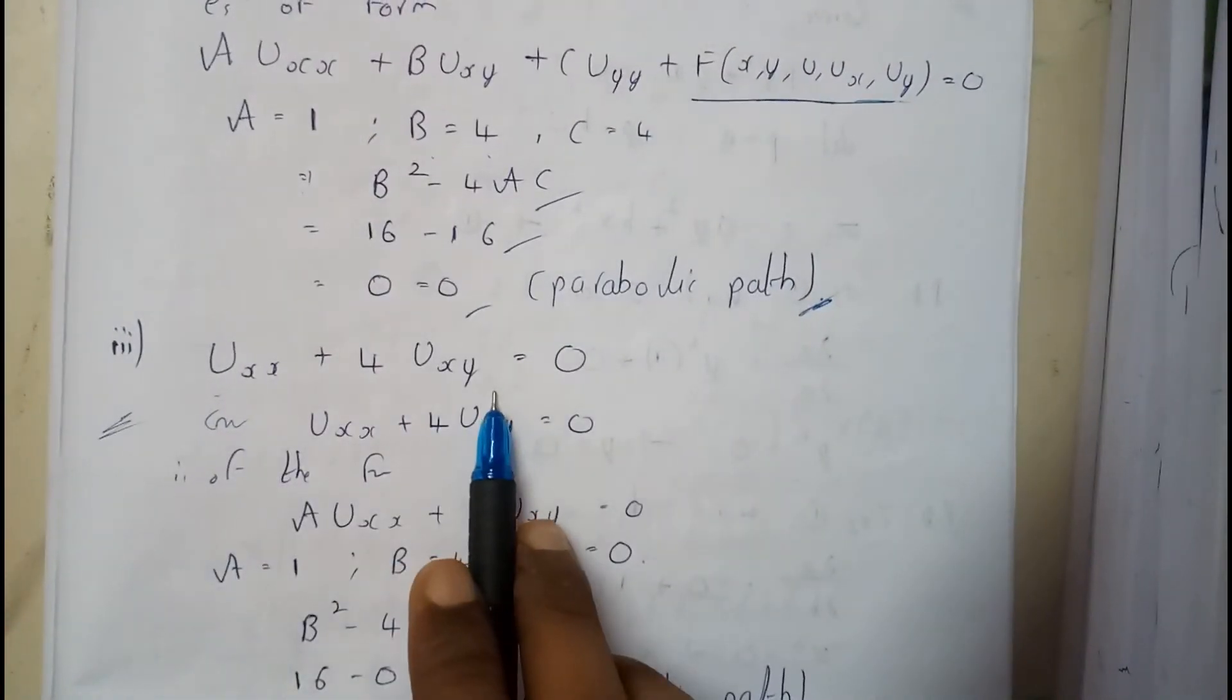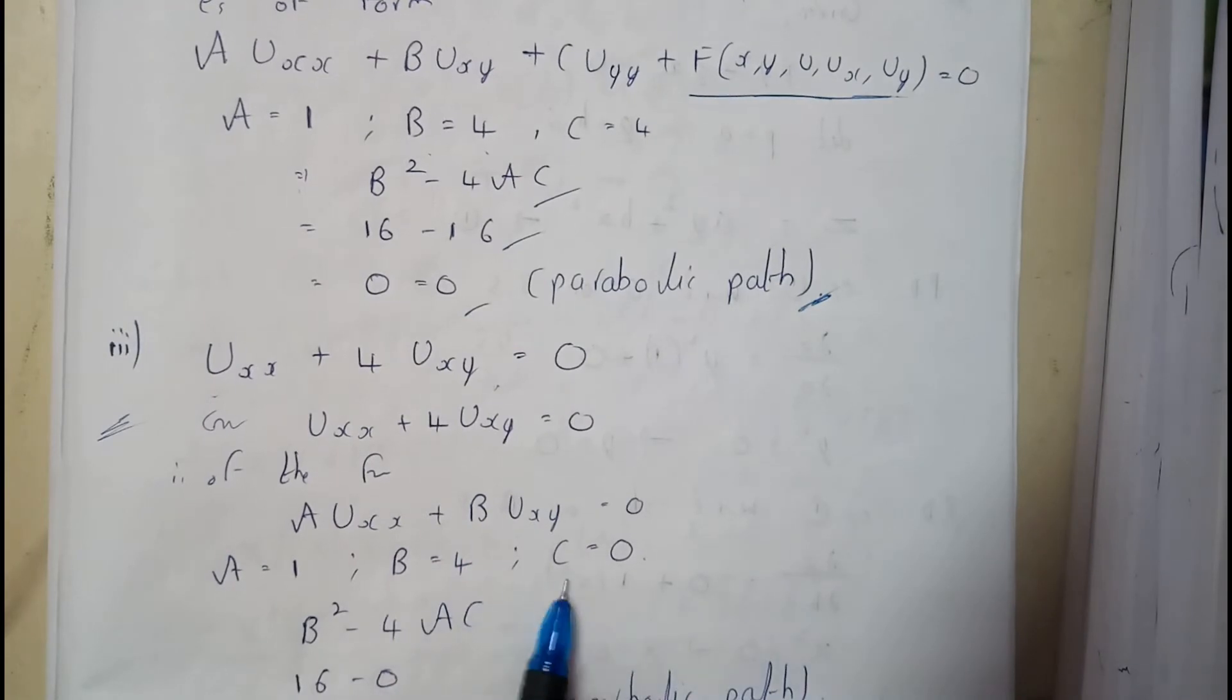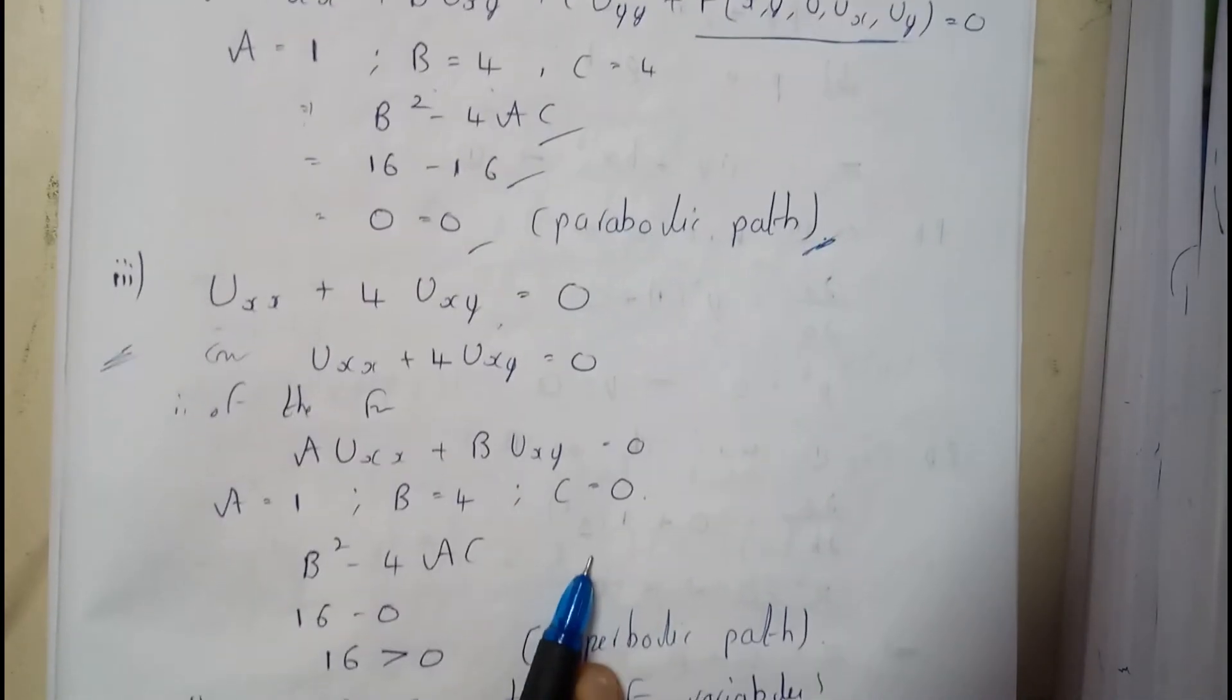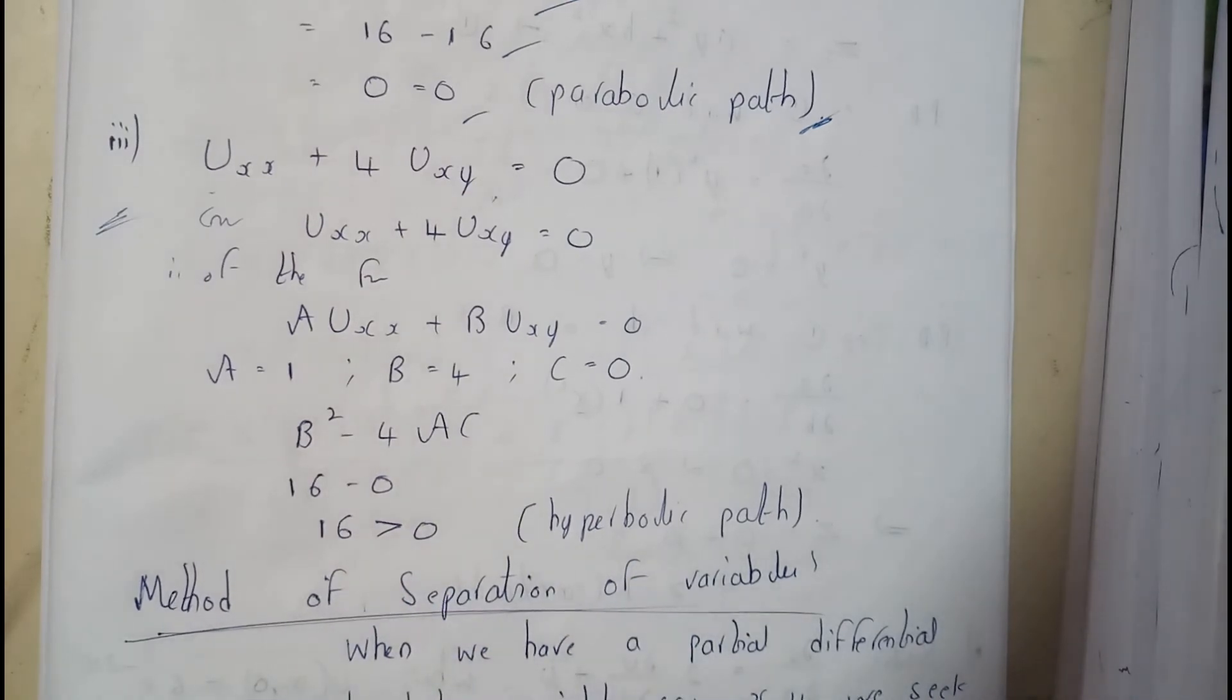Similarly, here the Uyy term is missing, so that coefficient equals 0. We get a positive value greater than 0, so it's a hyperbolic path.